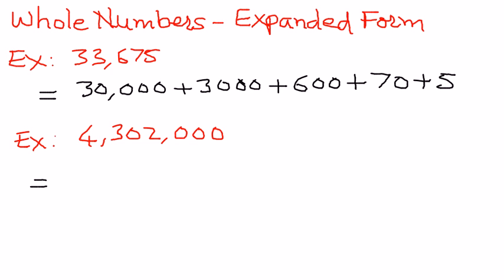We do the same thing. The place value positions are: 1's, 10's, 100's, 1,000, 10,000, 100,000, and million.